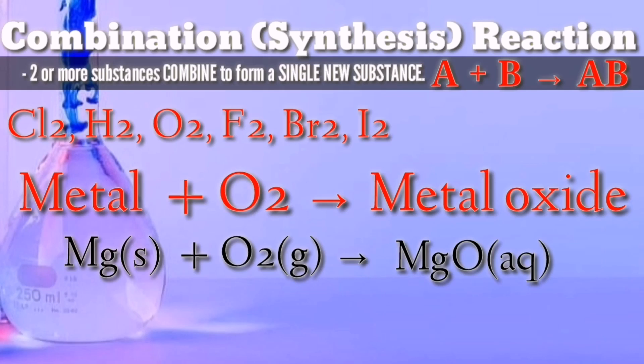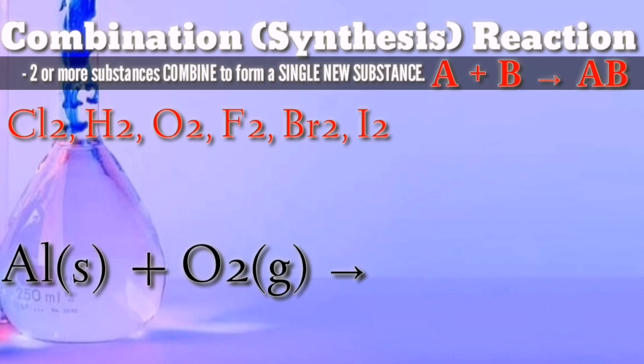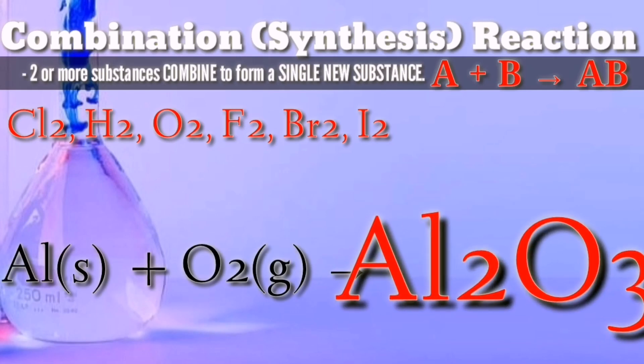Next example is aluminum as our metal, then oxygen. It will form a metal oxide compound, which is aluminum oxide.